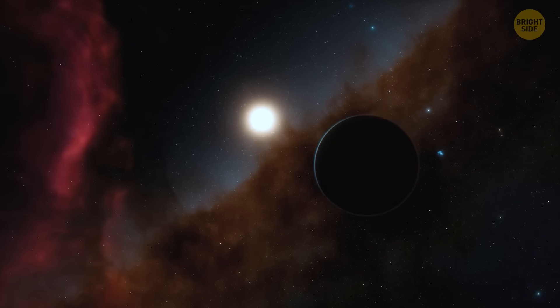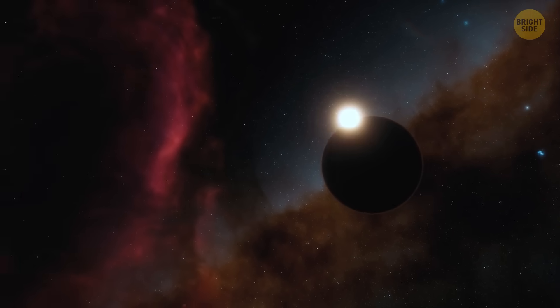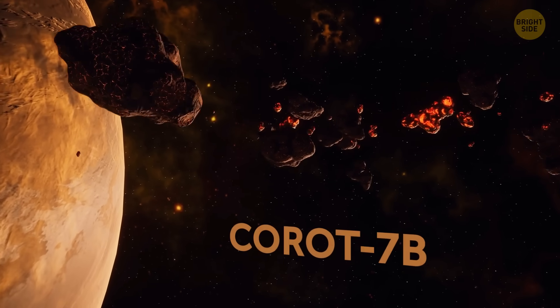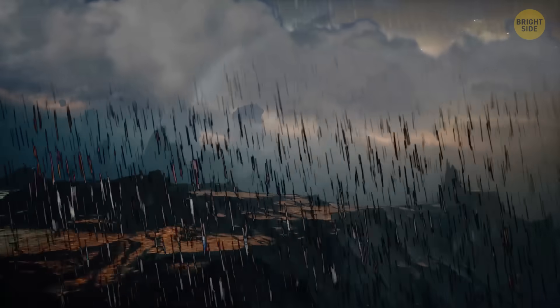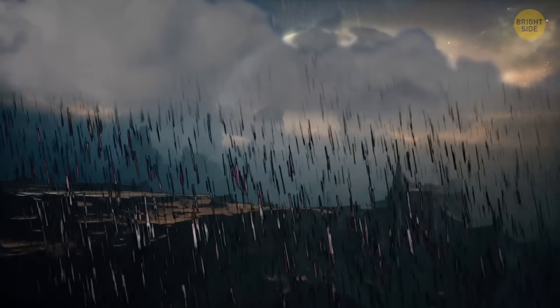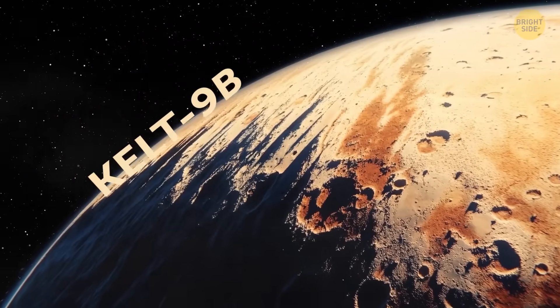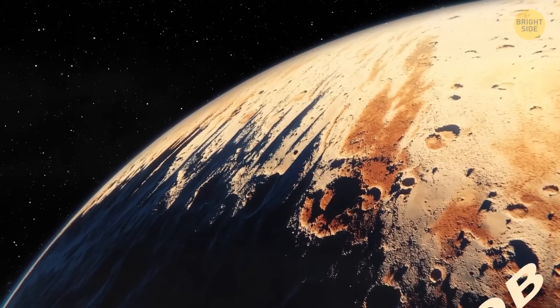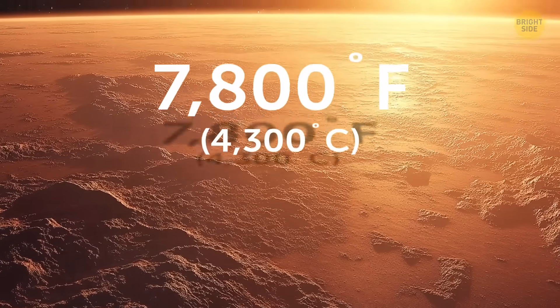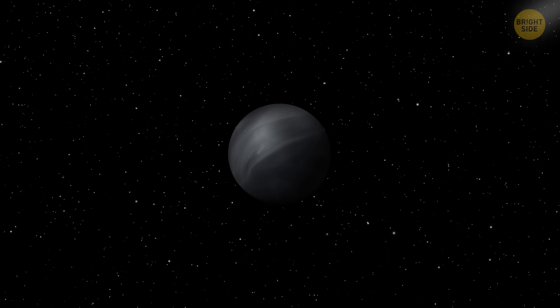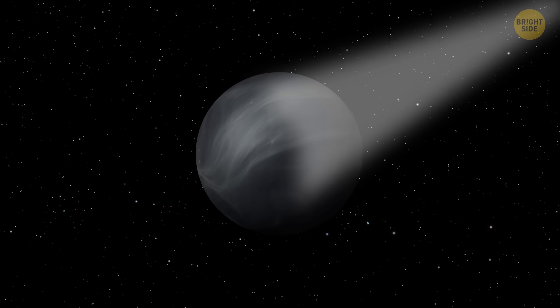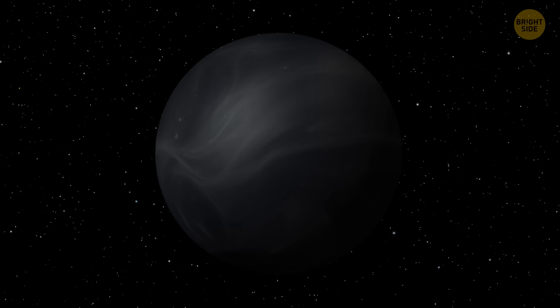But that's not all the universe has to offer. Once you start exploring, you can come across exoplanets like Corot 7b, where rock clouds form and send pebbles raining from the skies, or KELT 9b, the hottest known planet with surface temperatures reaching 7,800 degrees Fahrenheit, or TrES-2b, the darkest planet ever discovered. It absorbs over 99% of the light it receives, making it blacker than coal.